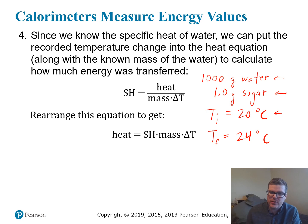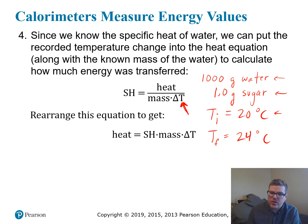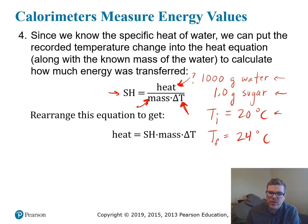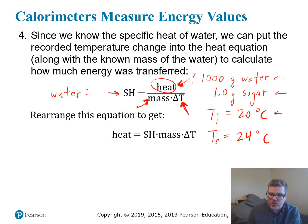Here is the heat equation we learned last time: specific heat equals heat divided by mass times delta T. We're observing the temperature change in the water, so this delta T is how the water changes temperature. The water changes temperature because heat flows from the burning sugar into the water — that heat is what we want to find. We can observe the temperature change by taking the water's temperature, and we measured the precise mass of water. All variables in this equation refer to the water: the specific heat of the water, the mass of the water, and the temperature change of the water. The heat is what went into the water, which is the same heat that came out of the sugar.